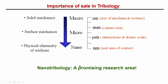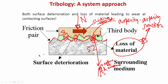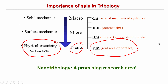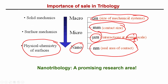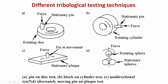Regarding the importance of scale in tribology: physics and chemistry at surfaces operate at the nanoscale, where real areas of contact form nanoscale interactions. At the atomic scale, interactions are at the micrometer level; contact size is at the millimeter scale; and mechanical systems operate at the centimeter scale — progressing from surface physics and chemistry to surface mechanics to solid mechanics. Nanotribology means friction and wear of surfaces in relative motion at the nanoscale.